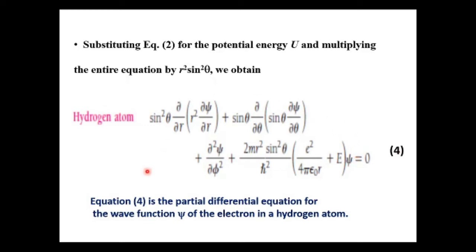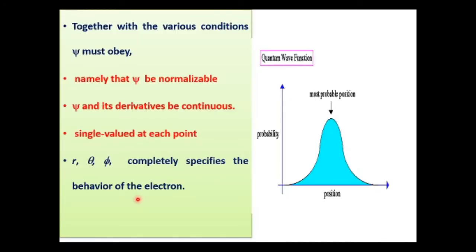This equation is a partial differential equation for the wave function of the electron in a hydrogen atom. The wave function must obey certain conditions: it should be normalizable, its derivatives should be continuous, it should be single-valued, and r, theta, and phi must completely specify the behavior of the electron. These are the required qualities of the wave function in spherical polar coordinates.